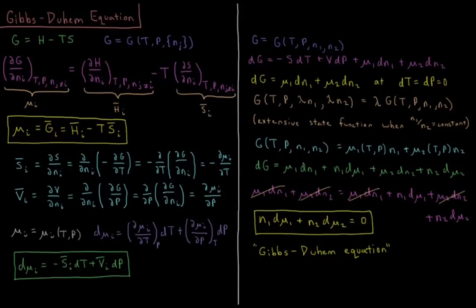This video will discuss the Gibbs-Duhem equation in thermodynamics. To start off, one of the possible definitions we can use for the Gibbs energy is that it's equal to the enthalpy minus the temperature times the entropy. For a mixture of various solutions, the Gibbs energy is also equal to a function of temperature, pressure, and the number of moles of every component in our mixture.